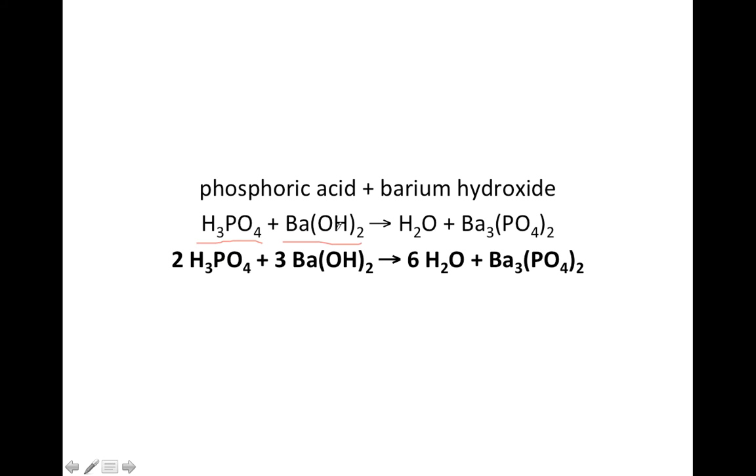If we want to use the same method we did on the previous slide, if there's two hydroxides here and three H+, the only way to get those equal is to put a two in front of the phosphoric acid and a three in front of the Ba(OH)2. Because if you do that, you now have six H+ and three times two is six OH-, therefore six waters are produced.